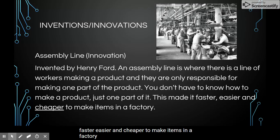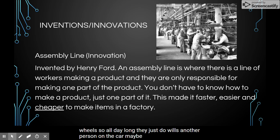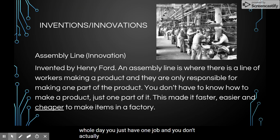This is an example of an assembly line. One person's job — all they do is wheels, so all day long they just do wheels. Another person does the steering wheel, another person does the door. But the whole day you just have one job, and you don't actually have to know how to make a car — you just have to know one part.